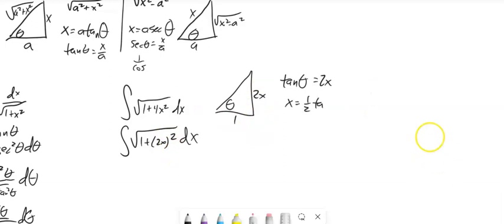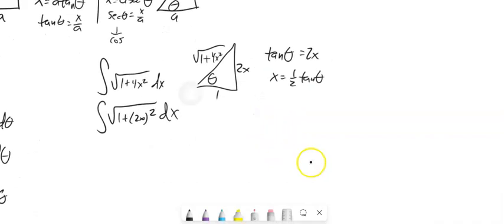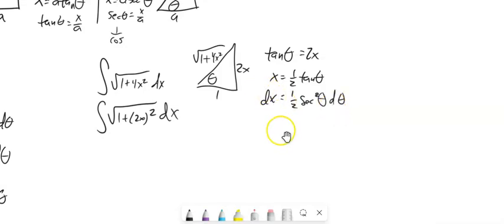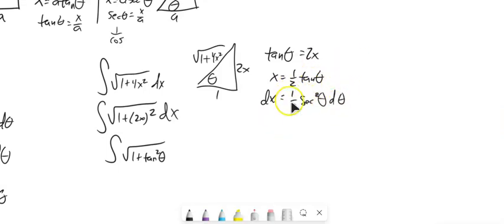So x = (1/2) tan θ. Looking at the triangle: tangent θ = 2x/1 = 2x, and by the Pythagorean theorem 1 + (2x)² = 1 + 4x². Now that I know what x is, I need dx. The derivative of tangent is sec², so dx = (1/2) sec²θ dθ. One really common error is to forget this part — just shove the substitution in and not replace dx.